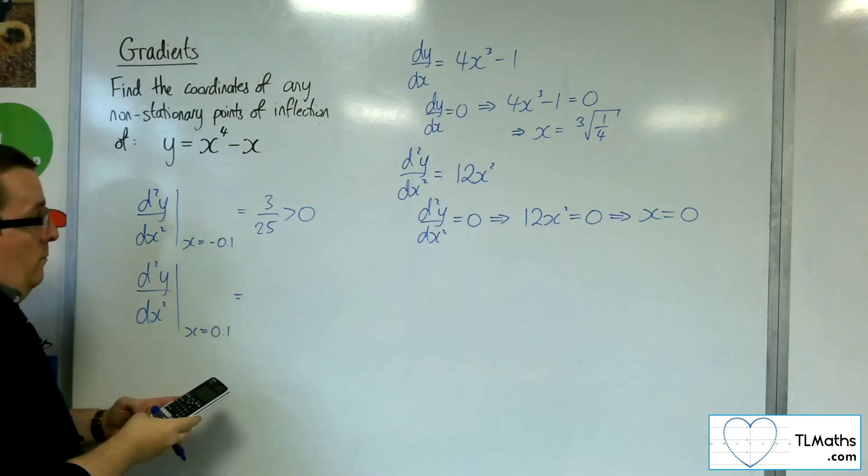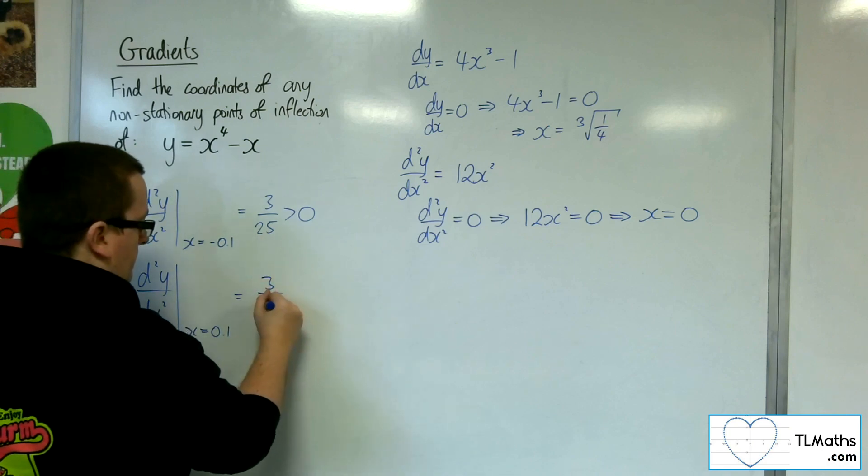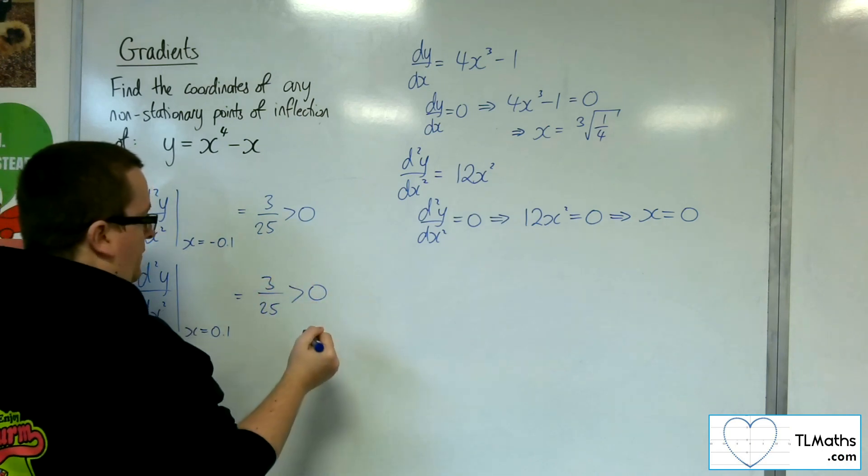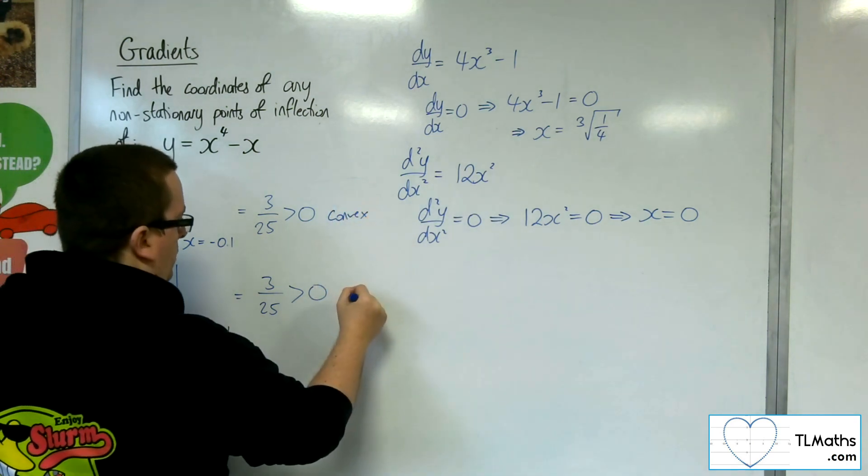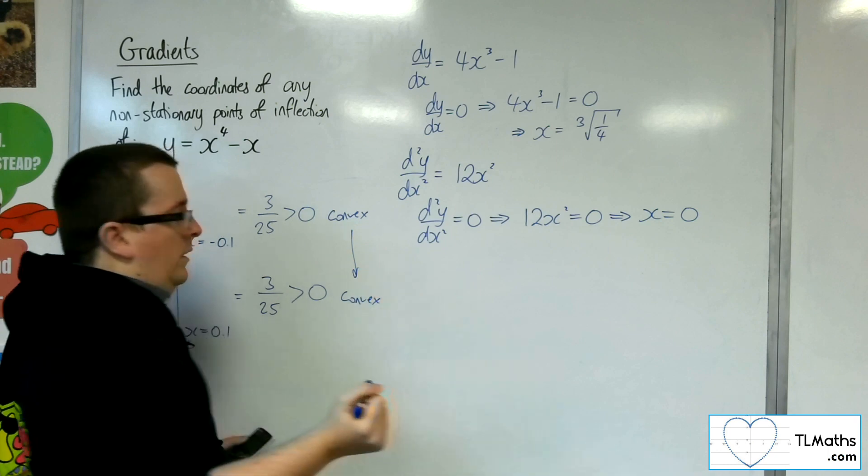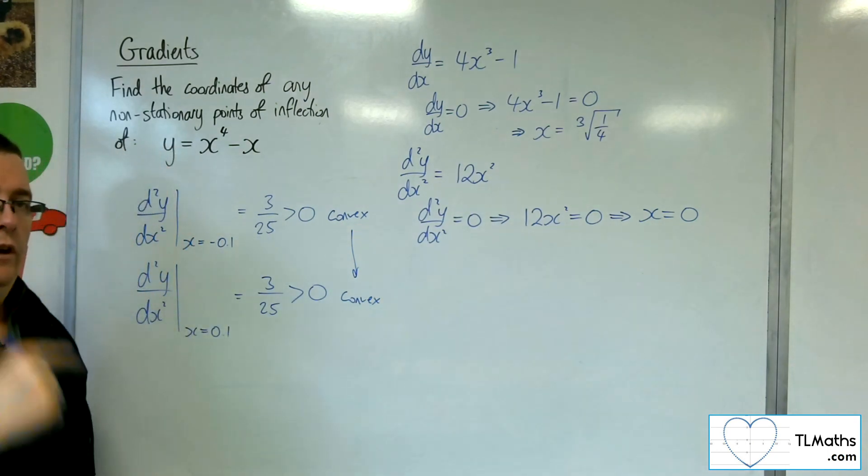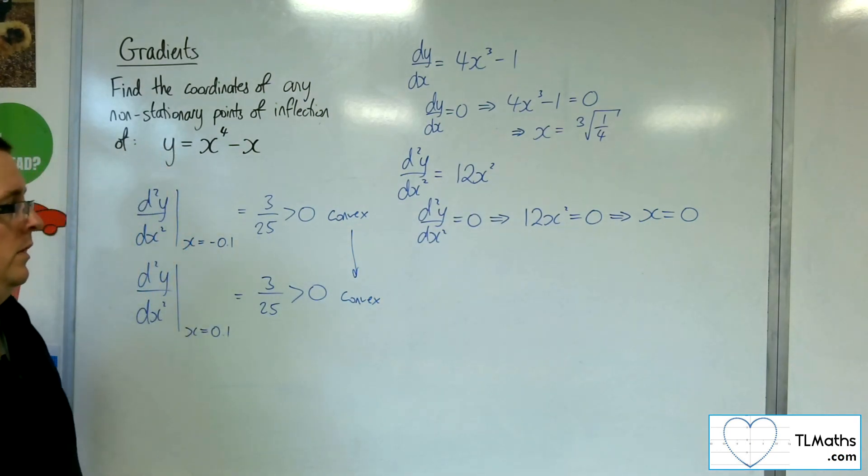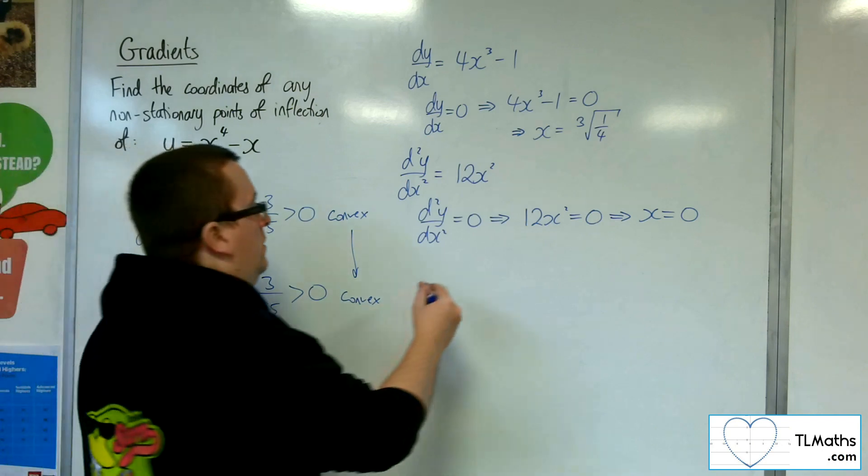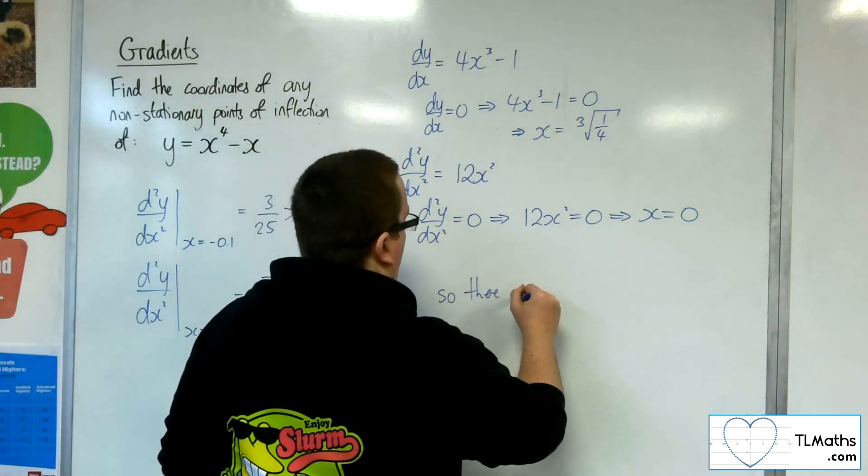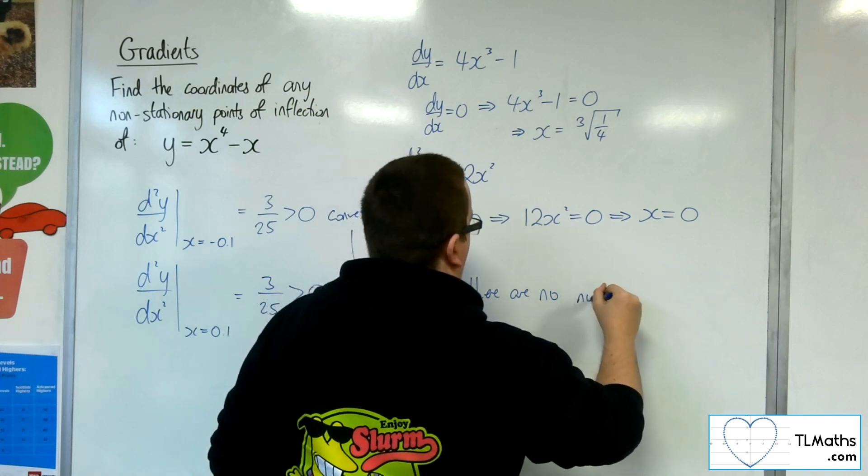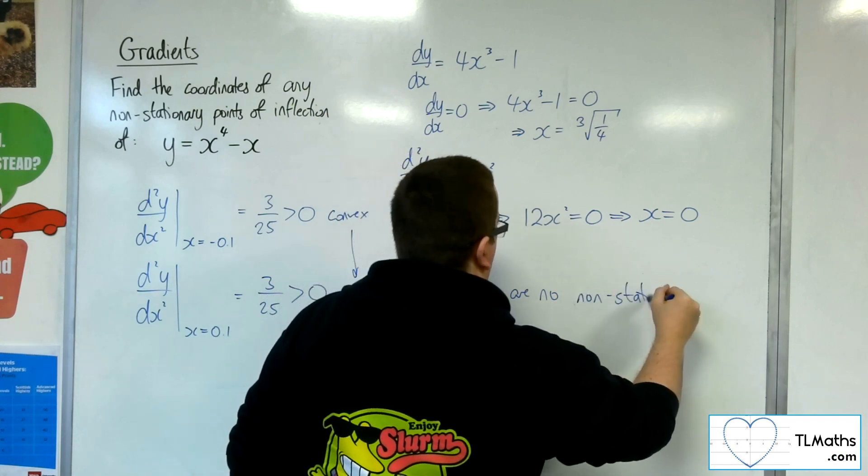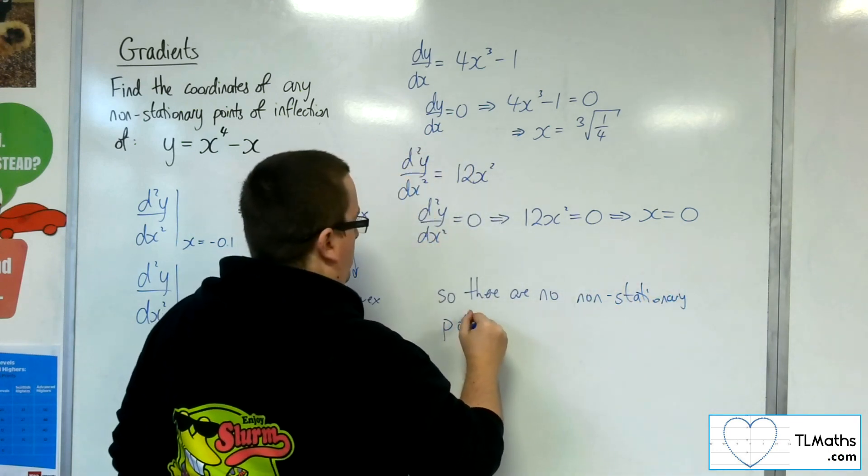And substituting 0.1 into that, we get the same thing, which is positive. So we've got convex to convex, which means there isn't a change of sign, so there are no non-stationary points of inflection.